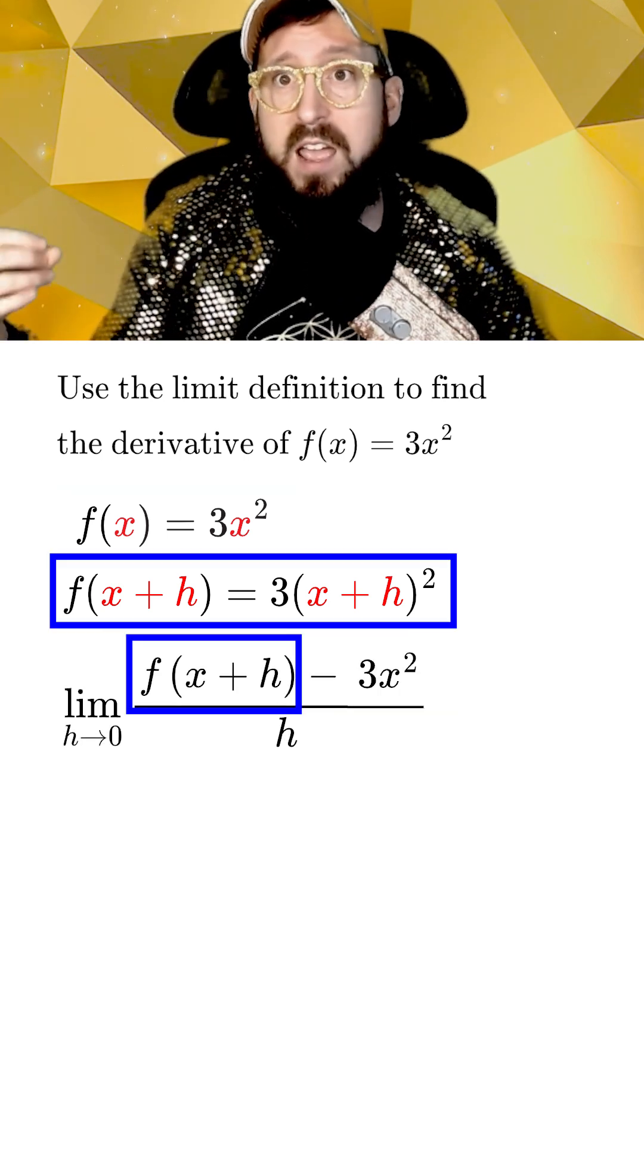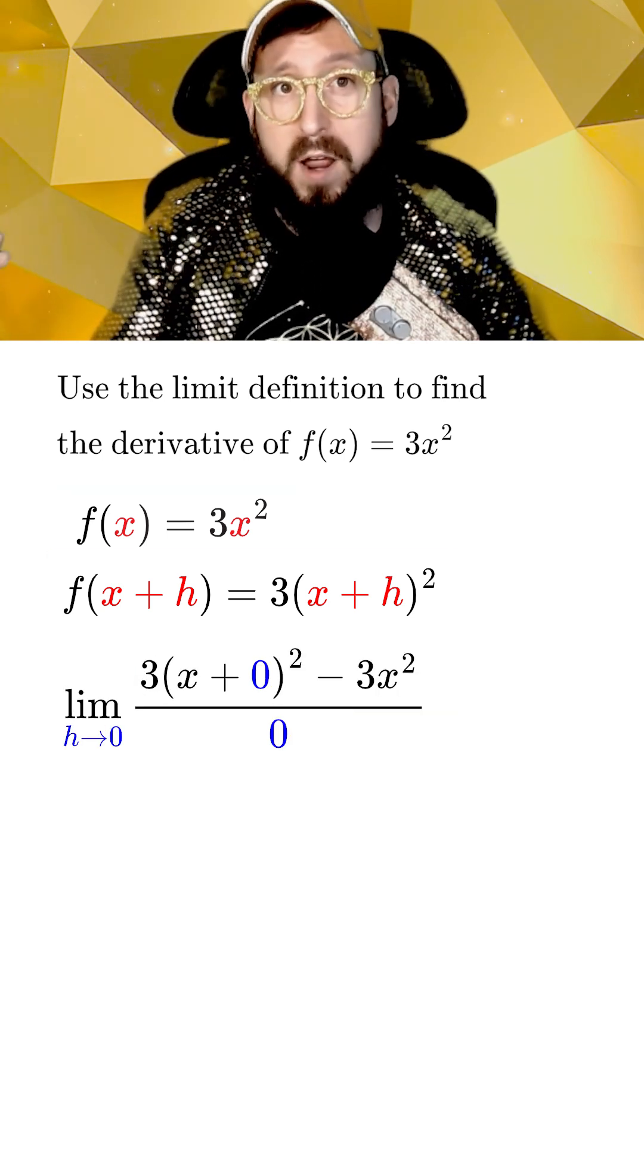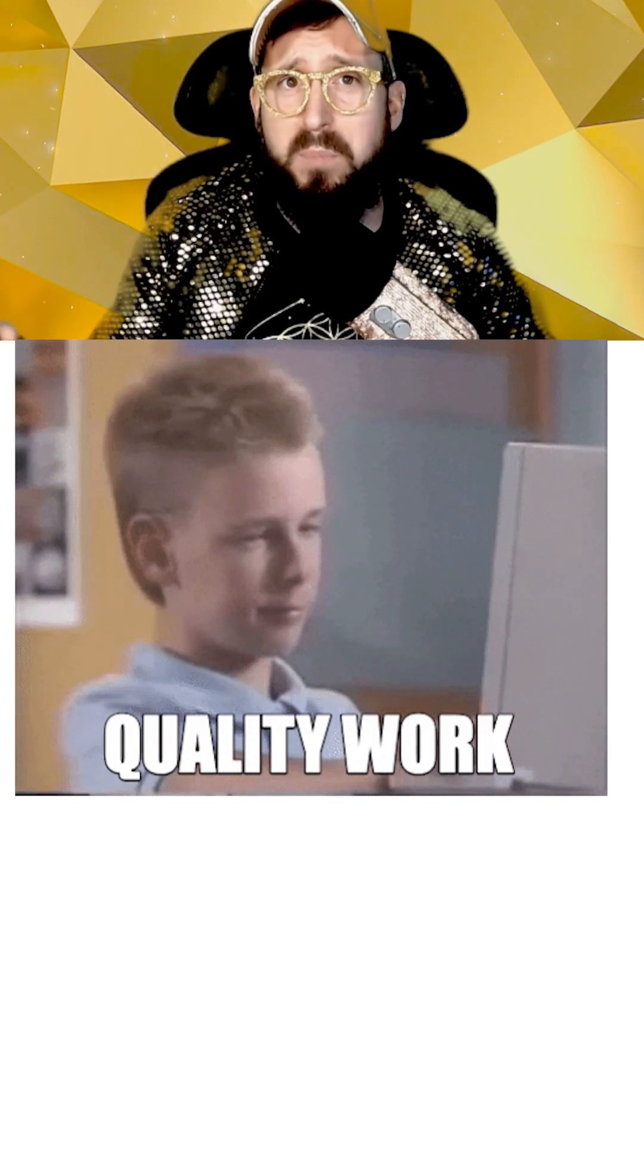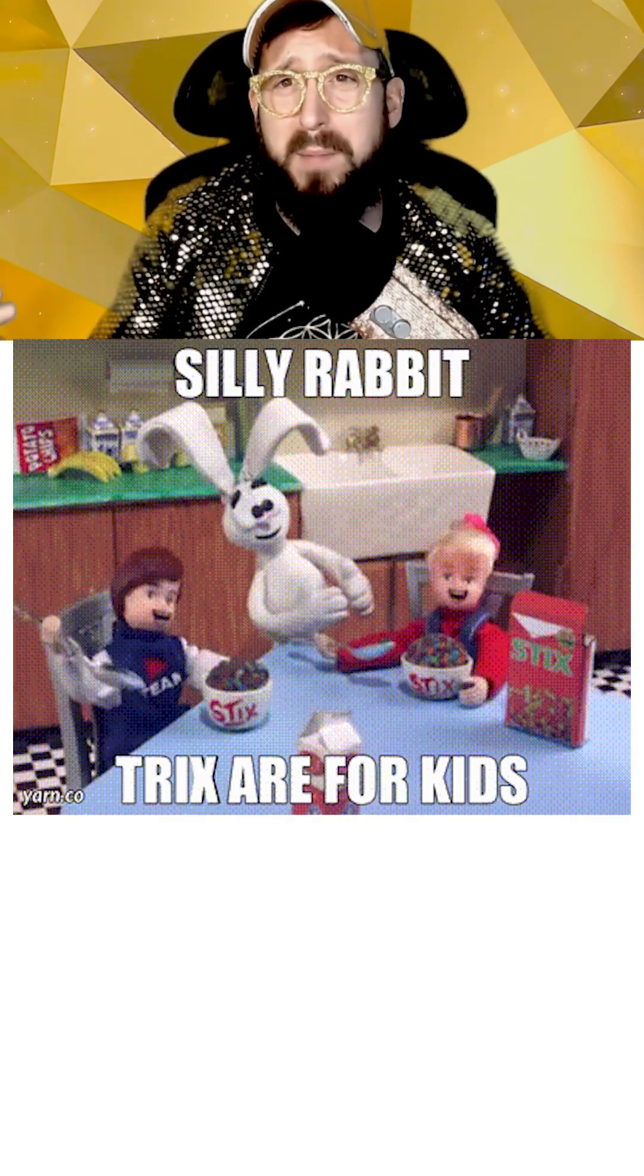Now we plug these into our limit formula and see if we were to just set h equal to zero right now, we would get zero over zero, which is bad. When this happens, it means we need to do more work and try some algebra tricks first.